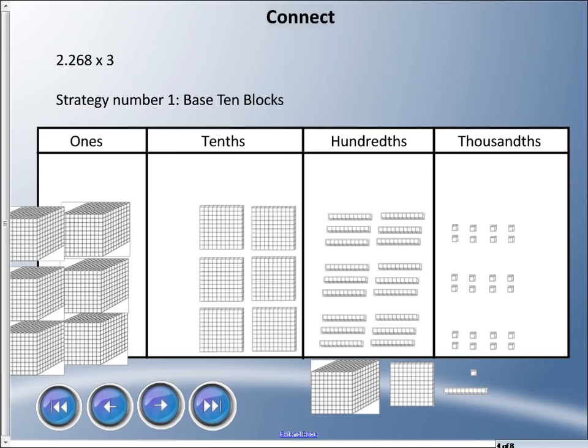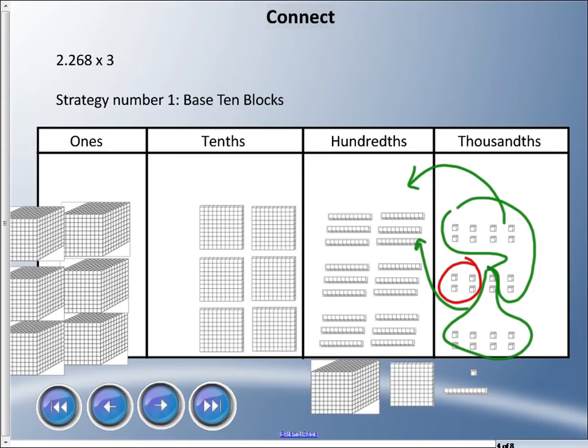We got to make this into something that we can work with. I have ten thousandths equals a hundredth, so if I have eight here, if I add maybe these two that would bring us another hundredth. Then if I do the same here, that also gets us another hundredth. That leaves these four left over as our thousandths.